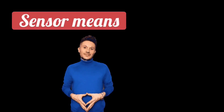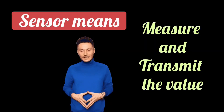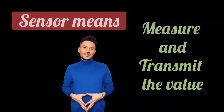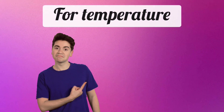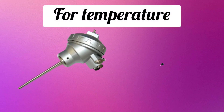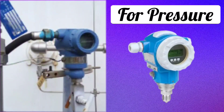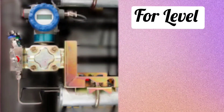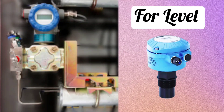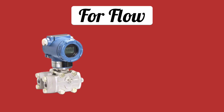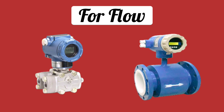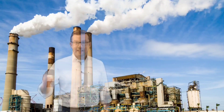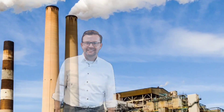Sensors are instruments that transmit measured values. For example, to measure temperature, RTD and thermocouple are used. To measure pressure, pressure transmitters are used. To measure level, differential pressure transmitters and level transmitters are used. To measure flow, flow transmitters and flow meters are used. Whichever parameter has to be controlled, the same sensor is used.